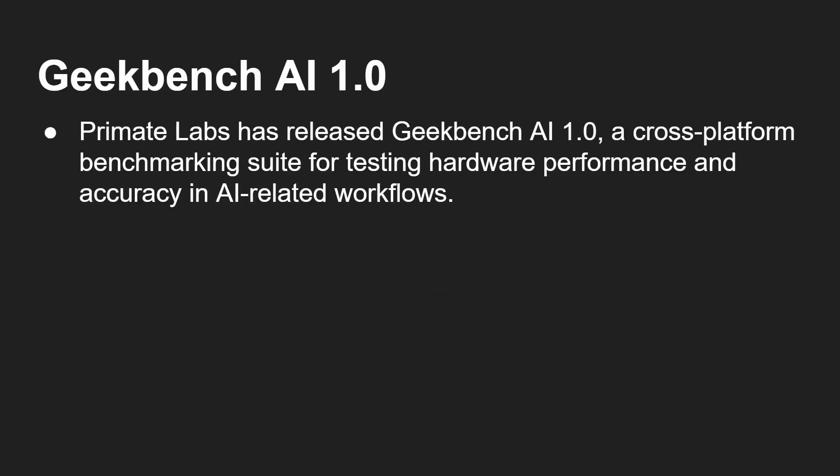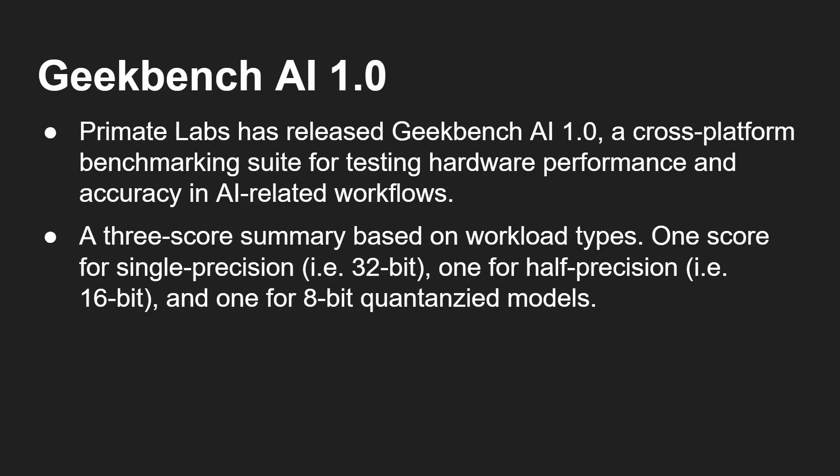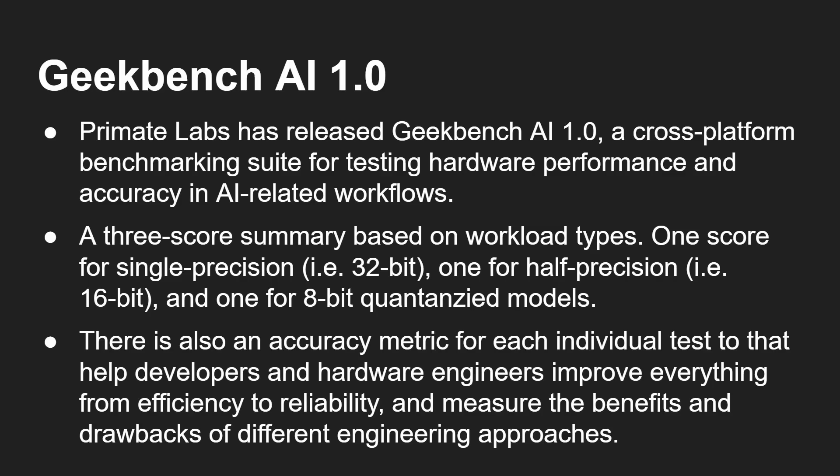Primate Labs has released Geekbench AI 1.0, a cross-platform benchmarking suite for testing hardware performance and accuracy in an AI-related workflow. A three-score summary based on workload types is given: one score for single precision (32 bits), one for half precision (16 bits), and one for 8-bit quantized models. There's also an accuracy metric for each individual test, which helps developers and hardware engineers improve everything from efficiency to reliability.